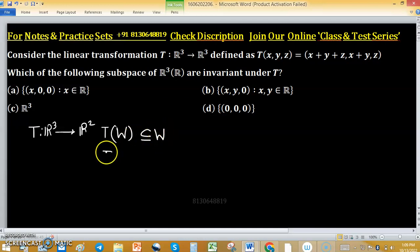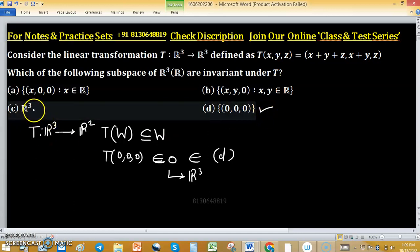As we know that T of 0 equals 0 and this one 0 of R3, so this one belongs to option D. So option D is trivial T invariant subspace, similarly R3, option C is true.